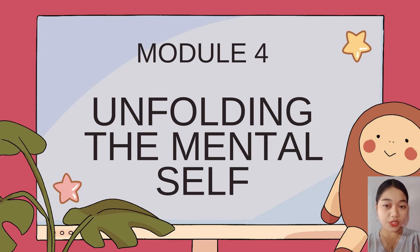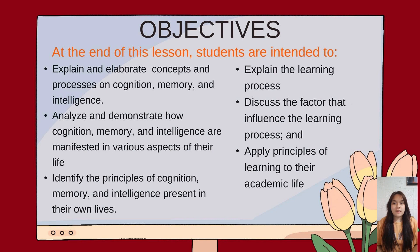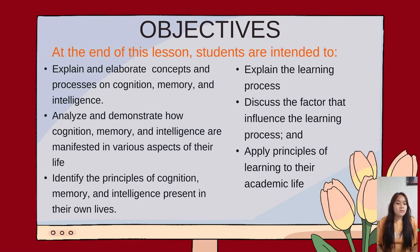But first, let us know our objectives. My name is Kailashemal Jaminor and I will read the objectives. At the end of this lesson, students are intended to: explain and elaborate concepts and processes on cognition, memory, and intelligence; analyze and demonstrate how cognition, memory, and intelligence are manifested in various aspects of their life; identify the principles of cognition, memory, and intelligence present in their own lives; explain the learning process; discuss the factors that influenced the learning process; and apply principles of learning to their academic life.